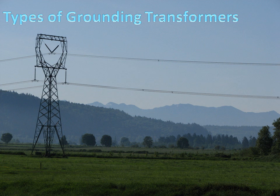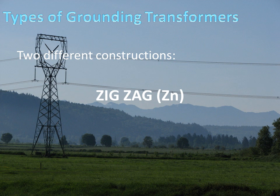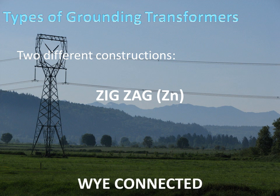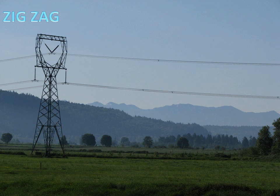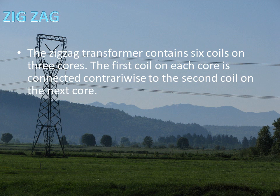There are two basic types of grounding transformers: zigzag primary connected or Y-connected primary. A zigzag transformer contains six coils on three cores. The first coil on each core is connected counterwise to the second coil on the next core.